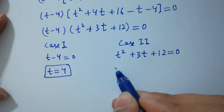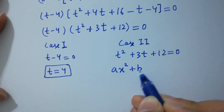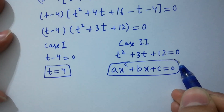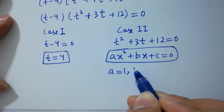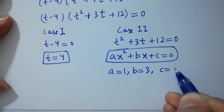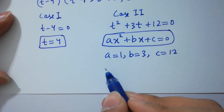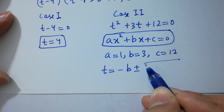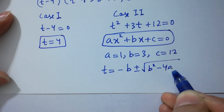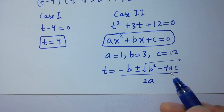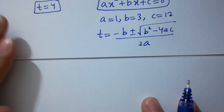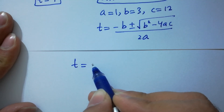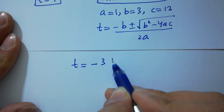Case two: t² + 3t + 12 = 0, which is a quadratic equation in the form ax² + bx + c = 0. Comparing, a = 1, b = 3, c = 12. Applying the quadratic formula: t = (-b ± √(b² - 4ac)) / 2a. Putting in the values: